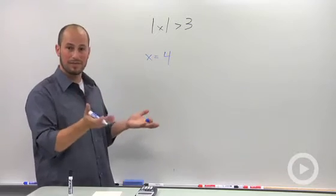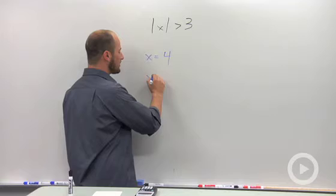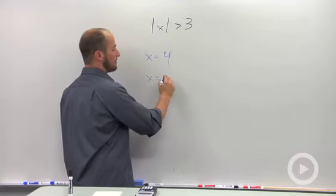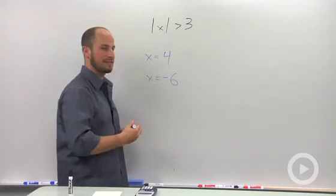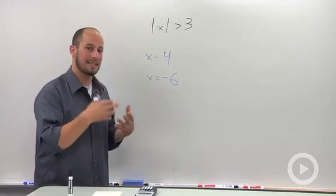What if we went to negative numbers? x equals negative 6. Absolute value of negative 6 is actually positive 6, 6 is greater than 3.